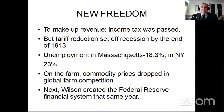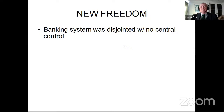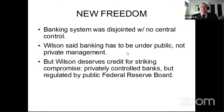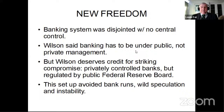Next, Wilson created the Federal Reserve in the same year, 1913. The banking system at that time was disjointed with no central control — a laissez-faire approach. Wilson said banking had to be under public, not private management, which was too risky. He struck a compromise: banks continued operating in a private stockholding arrangement but were regulated by the Federal Reserve Board, which could oversee banking, control interest rates, and print money. This setup avoided bank runs, wild speculation, and instability.